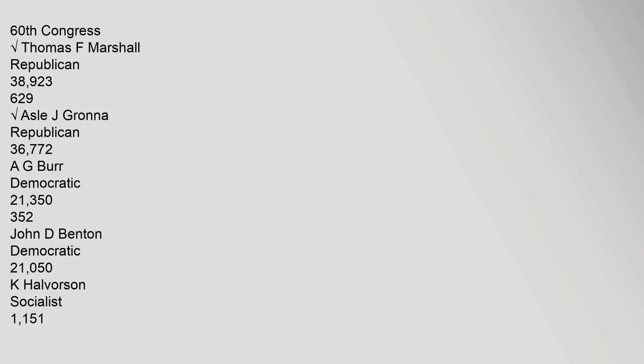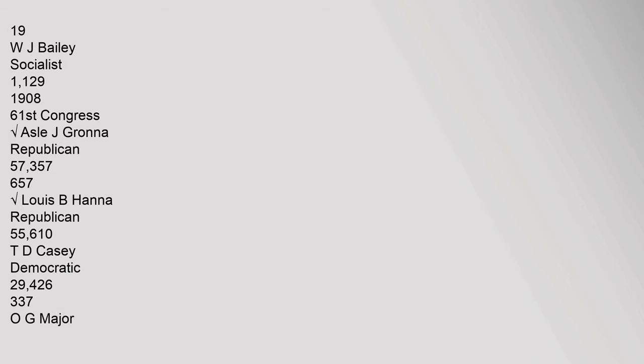1906 (60th Congress) — Thomas F. Marshall, Republican: 38,923 (62.9%); A.S.L.E.J. Grana, Republican: 36,772; A.G. Burr, Democratic: 21,350 (35.2%); John D. Benton, Democratic: 21,050; K. Halverson, Socialist: 11,151; W.J. Bailey, Socialist: 1,129.